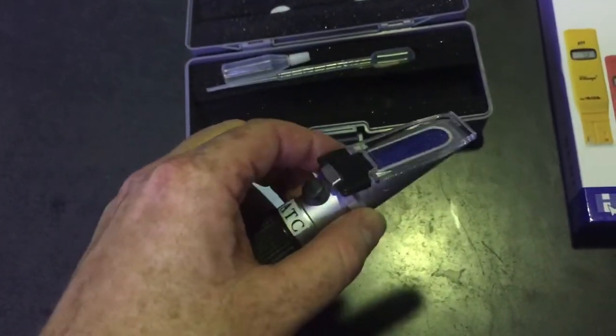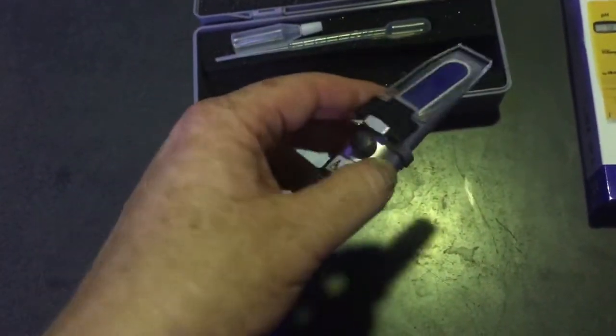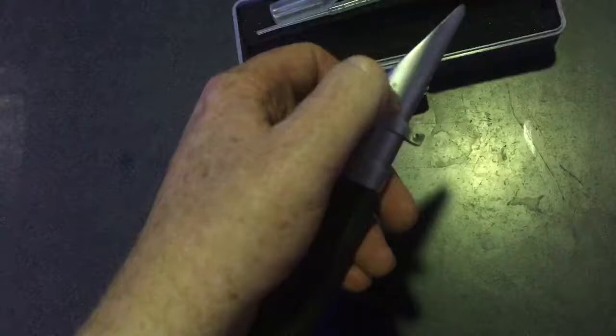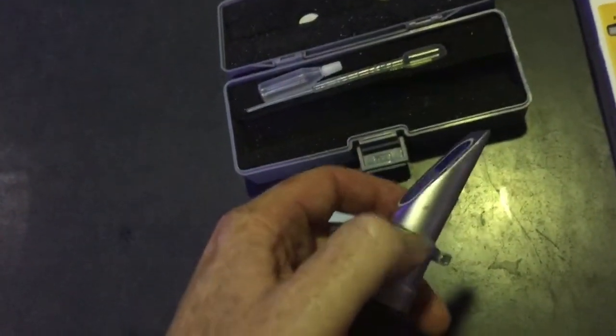Therefore you may get a wrong reading on your refractometer. So one thing you can do is just hold that back, tip that in the water, and hold that in the water for half a minute or a minute.